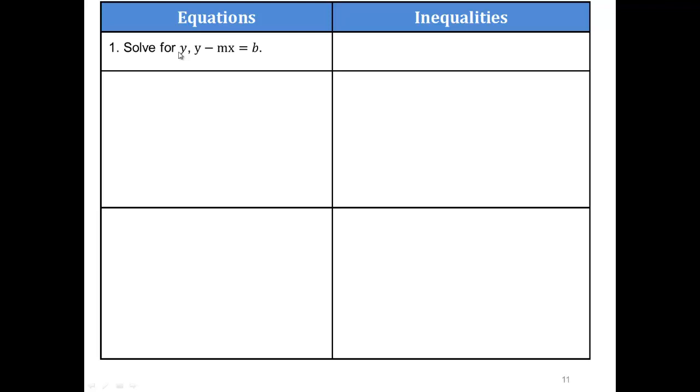That means I have y by itself and everything else on the other side. So what's everything on this side here? y minus mx equals b minus mx. How do I get rid of the minus mx? What undoes subtraction? Addition.